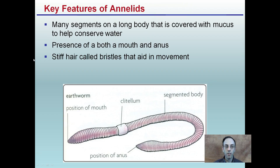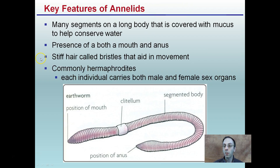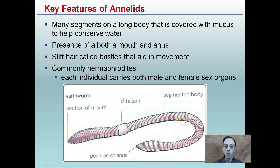Key features: segments within a long body covered with mucus to help conserve water. Since these are terrestrial animals, they need to find a way to conserve water. They have both a mouth and an anus. They have stiff hairs called bristles that aid in movement through the soil. They are commonly hermaphrodites, meaning each individual carries both male and female reproductive organs.